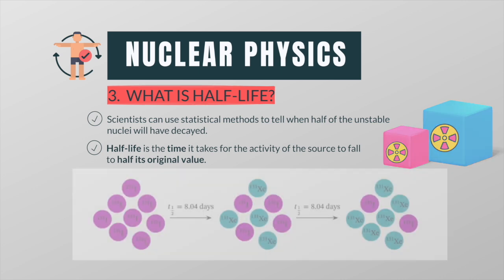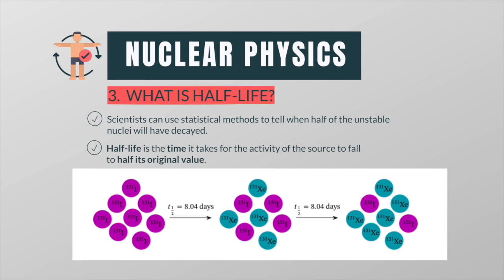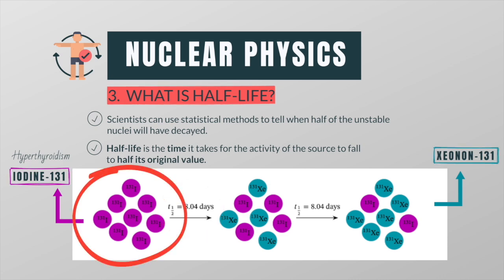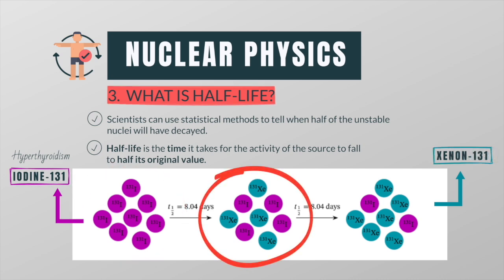Here's an example of how a radioactive sample is decaying over time. Iodine-131 is a radioactive isotope of iodine that is commonly used to treat hyperthyroidism. Iodine-131 undergoes beta decay to become stable xenon-131. The half-life of this reaction is approximately 8 days. This means that if we have a sample of 8 iodine atoms, after 8 days half of the atoms will have decayed to form xenon and half will still be radioactive iodine.